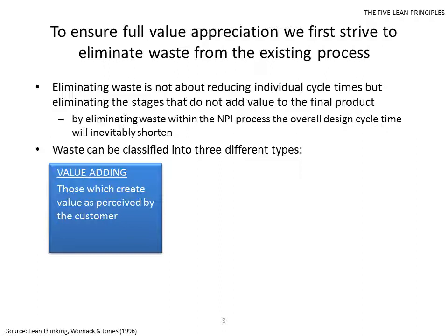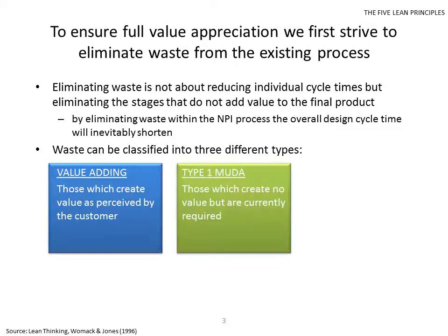Things like brainstorming — you generate a lot of possibilities to get the one idea you want. Potentially all those you throw away are waste, but actually they've helped you get somewhere, so it's useful to do. Type 1 muda — muda is a Japanese word for waste — refers to things which create no value but are currently required.